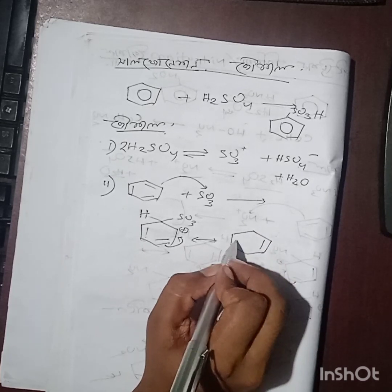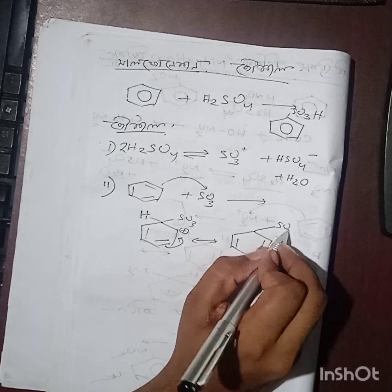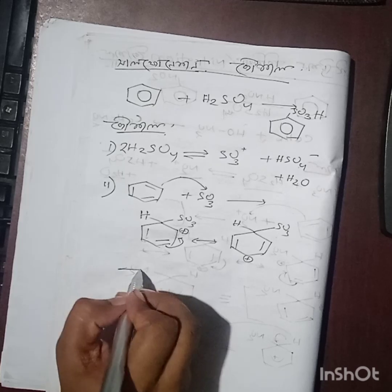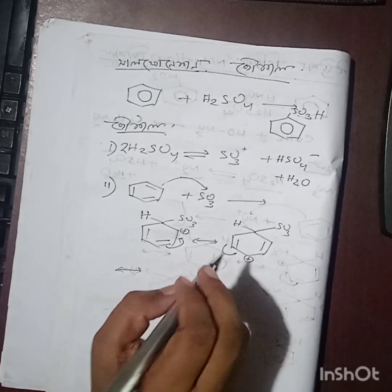And the double bond electrons move through resonance. The second step shows SO3 on the benzene with hydrogen, and electrons shift from one position to another.